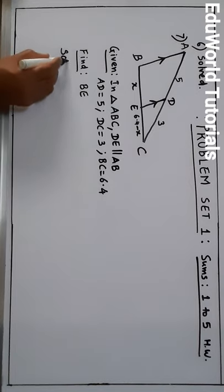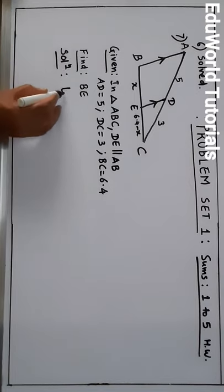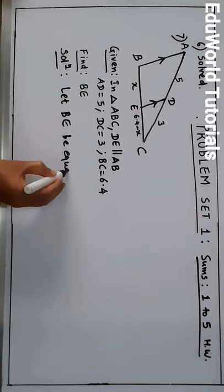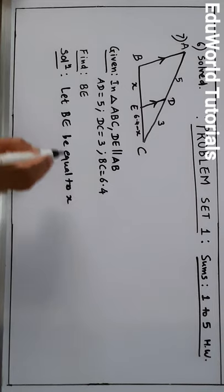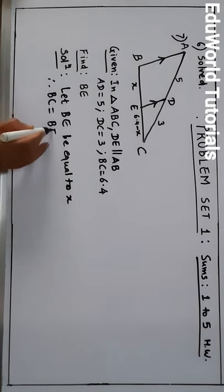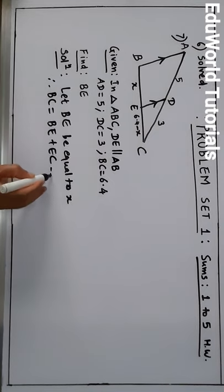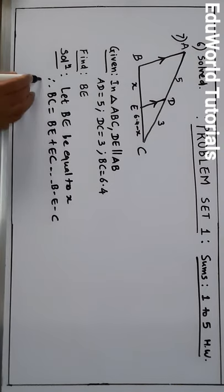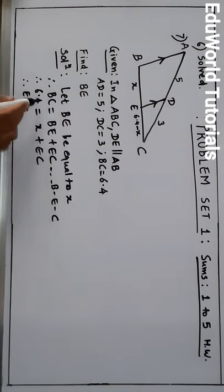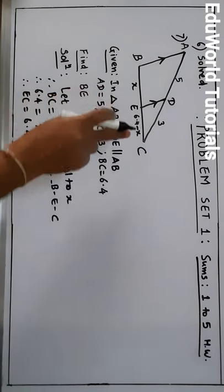In the solution, we will write: let BE equal to X. Therefore, BC is equal to BE plus EC because B, E, C are collinear. BC is given 6.4. We assumed BE = X, so we get EC. If you bring X to the other side, EC = 6.4 minus X.